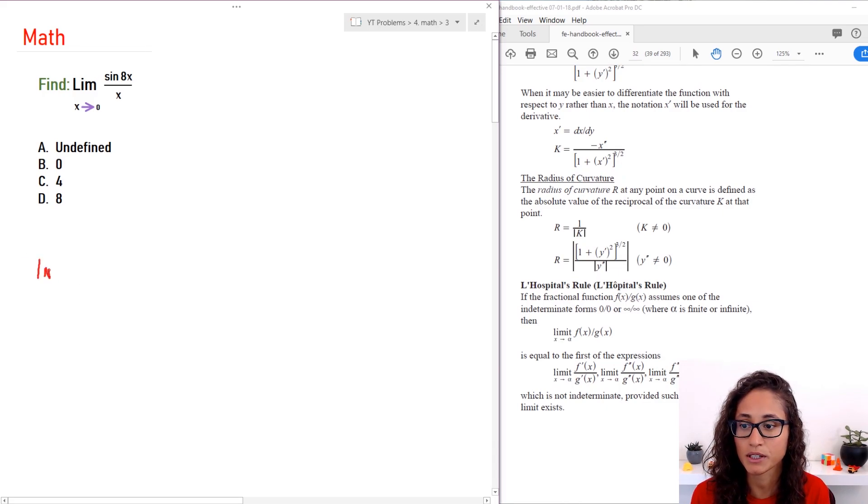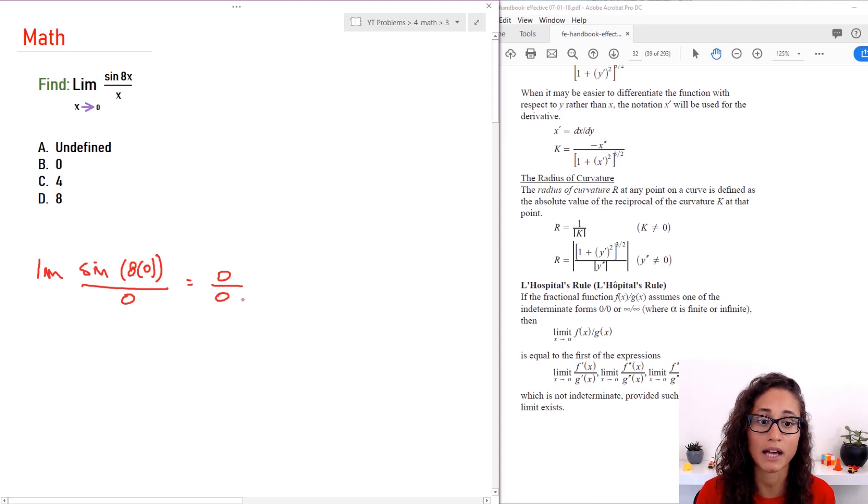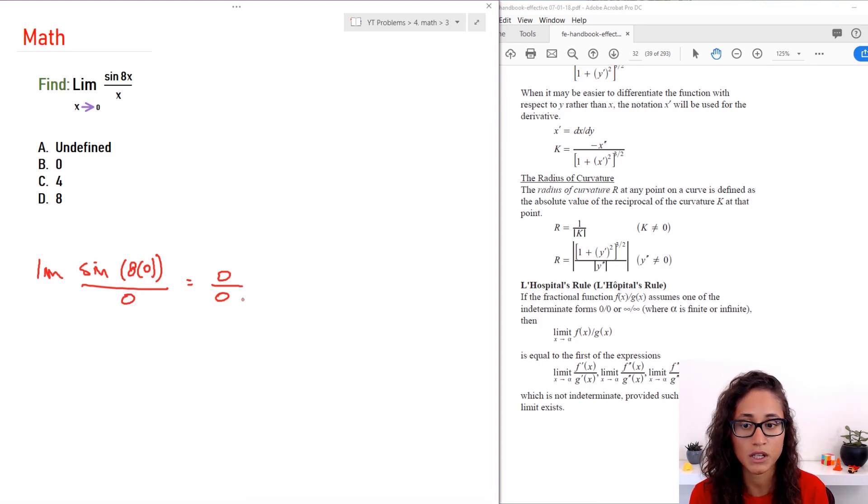So I'm going to have limit of sine of 8 times 0 over 0. Sine of 0 is 0, right guys? 8 times 0 gives you 0, then sine of 0 is just 0, and then I have 0 over 0. Well, this is actually considered as indeterminate form. It's not undefined, it's indeterminate.